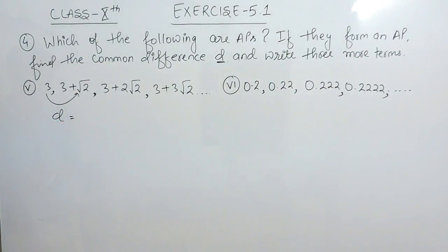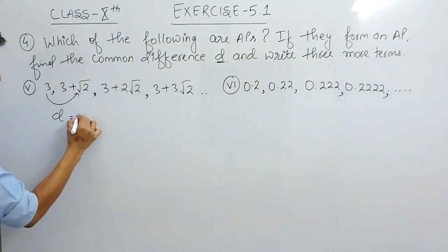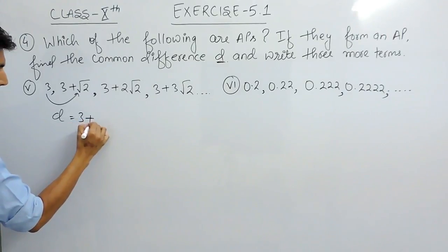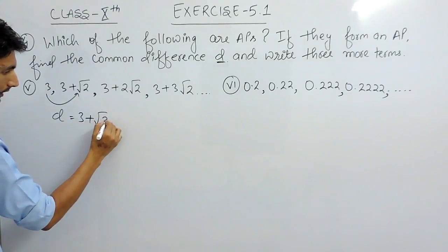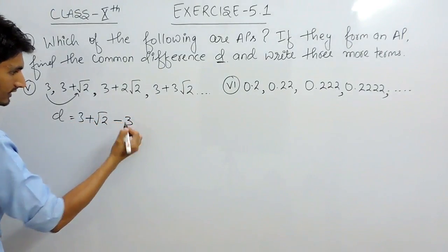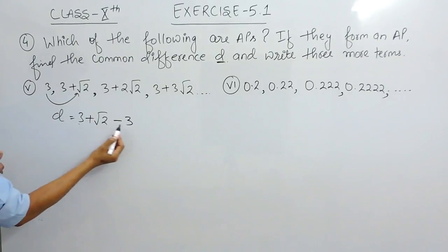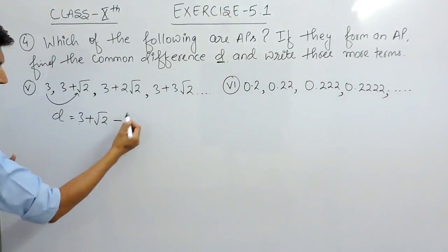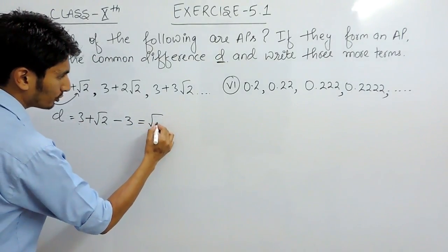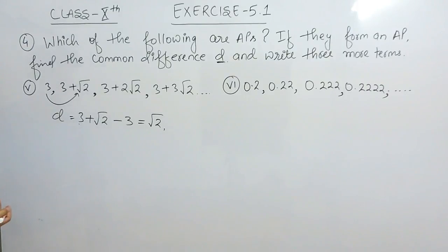So the first common difference is when we subtract this term from this term. The 3s cancel out and the common difference is √2.